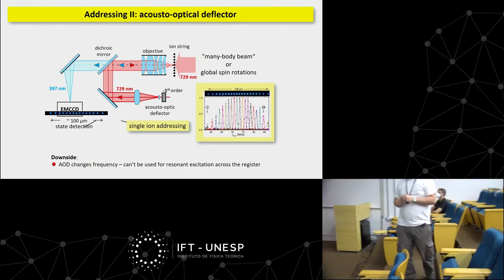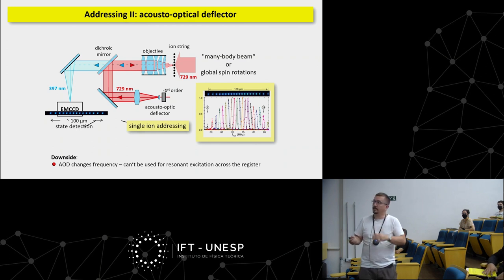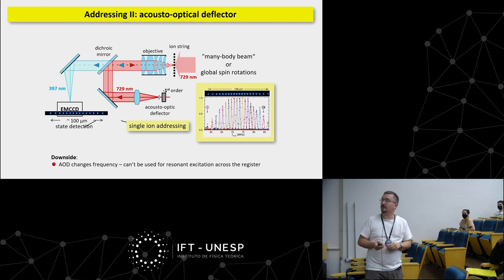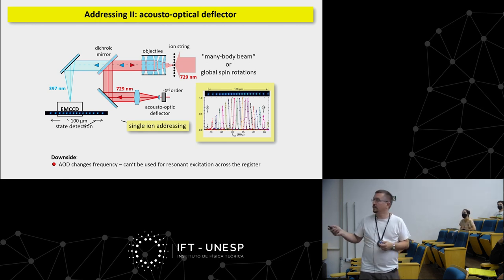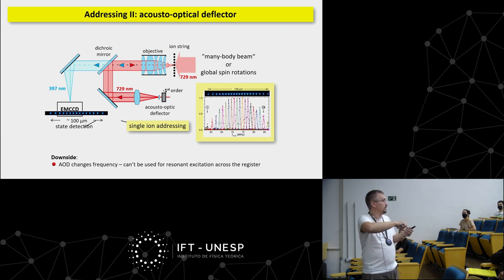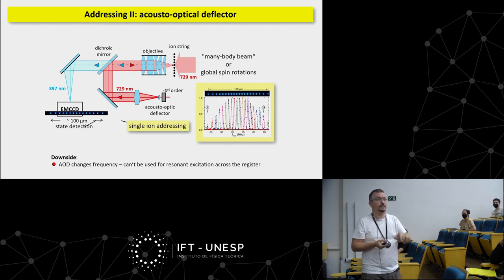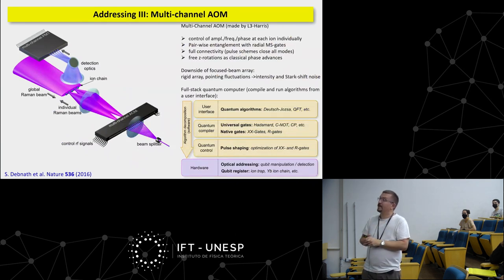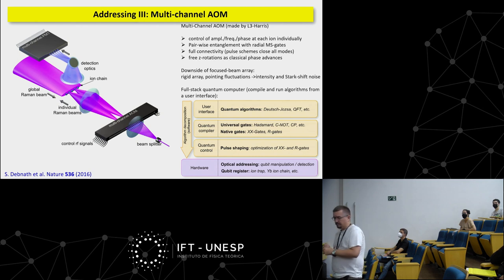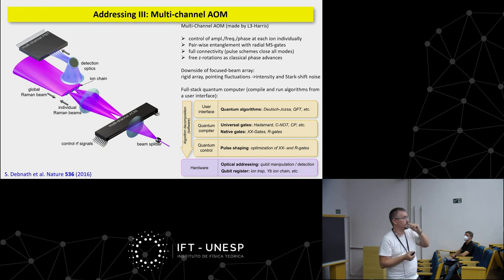What you could also do is use just the AOM itself — it changes the direction of your beam. By scanning the frequency you can nicely align excitation on each and every ion. You see an envelope because the AOM is not equally efficient for all frequencies. You can do nice single-ion addressing. One big problem: the laser frequency changes with position, so you cannot really use that approach if you want to remain resonant, unless you try to compensate in the background — but then the control system becomes a pain in the neck.